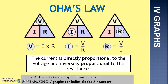Looking at Ohm's Law now. Ohm's Law shows us the relationship between current, voltage, and resistance. Ohm's Law states that voltage, or potential difference, is current times resistance. Ohm's Law states that current is directly proportional to the voltage and also inversely proportional to the resistance.